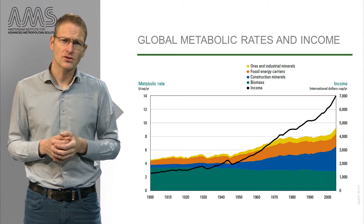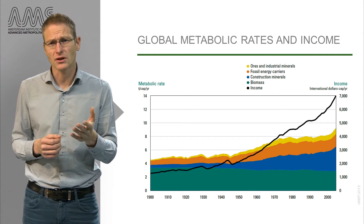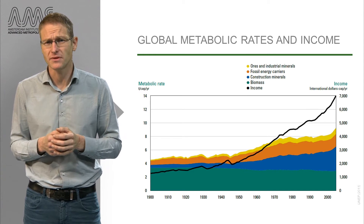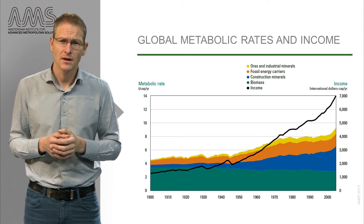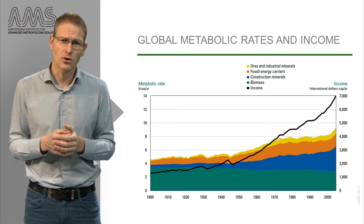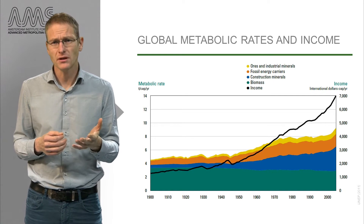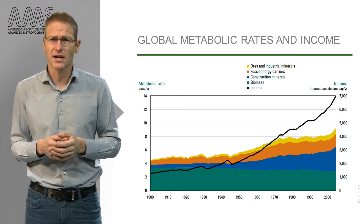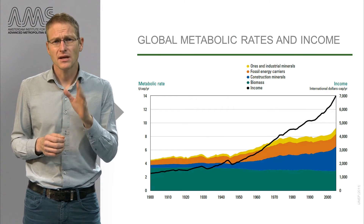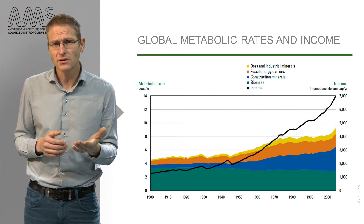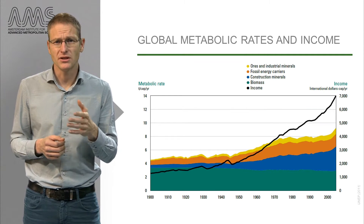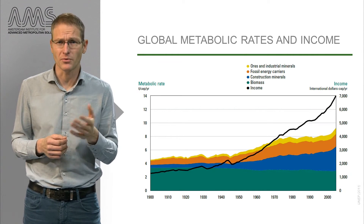Looking in more general terms at resource use and socio-economic indicators such as GDP or income, a positive relationship between the two can be observed. In this graph it can be seen how the global gross domestic product has grown and material input has increased alongside it, while at a slower pace. The strongest increase can be observed for construction minerals, which grew by a factor of 32, which is actually due to the development of cities and population growth.